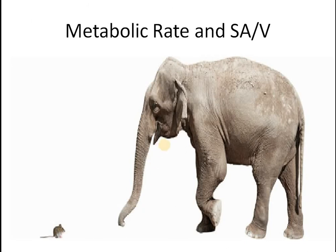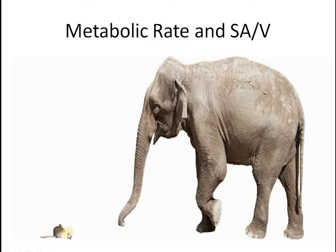Now, metabolic rate and surface area to volume ratio. In the diagram I have placed a very small animal and a very large animal. The metabolic rate — the rate of reaction — in the small animal would be much greater than in the big elephant. This animal's heart rate would be higher, all the biochemical reactions in its body would be higher, and its movements are higher compared to the big lazy elephant. So the surface area to volume ratio in a big animal is less since the metabolic rate is also less. On the other hand, surface area to volume ratio of a small animal is greater since metabolic rate is greater.